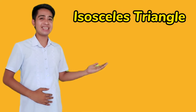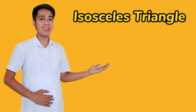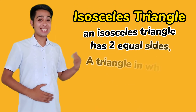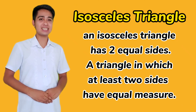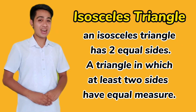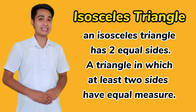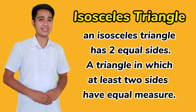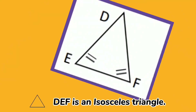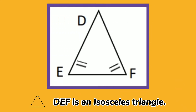The second one is the isosceles triangle. An isosceles triangle has two equal sides — a triangle in which at least two sides have equal measure. Triangle DEF is an isosceles triangle.